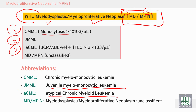BCR-ABL PCR is negative in this atypical form of chronic myeloid leukemia. The final subtype is MDS-MPN unclassified.